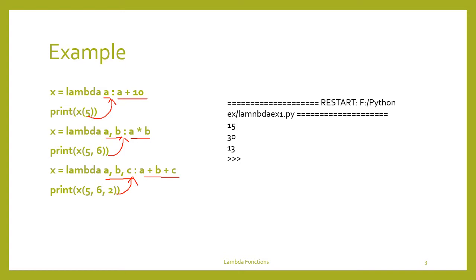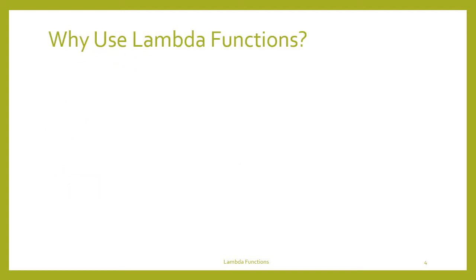The result is displayed using the print function. This is a small anonymous function which accepts some arguments — either one, two, three, or n number of arguments — but it contains only one expression. We can see in each and every example there is only one expression. These kinds of functions are called lambda functions.